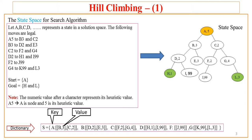Before getting into the actual code of the algorithm, let us first see the state space description which is required to be given to the algorithm in the form of some data structure. The description of state space is something like this: A, B, C, D represent states in the solution space and the following moves are legal. For example, one can move from A5 to B3 and C2.